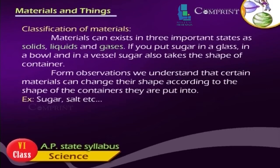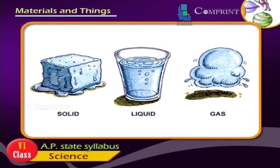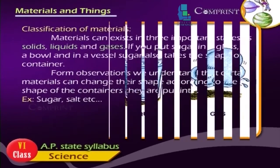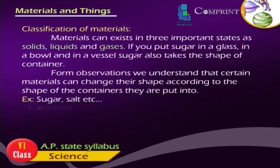Materials can exist in three important states: as solids, liquids, and gases. If you put sugar in a glass, in a bowl, and in a vessel, sugar also takes the shape of the container. From observations, we understand that certain materials can change their shape according to the shape of the containers they are put into.